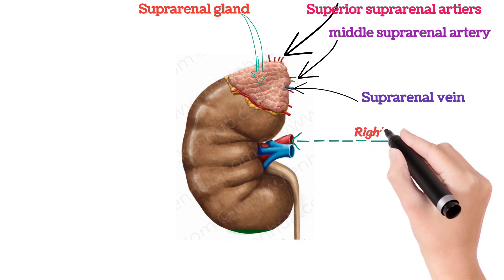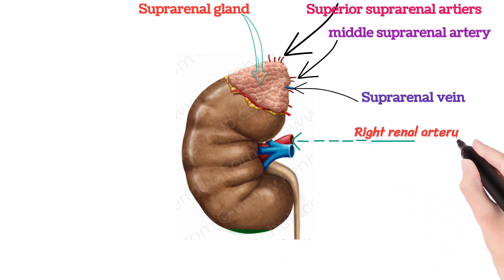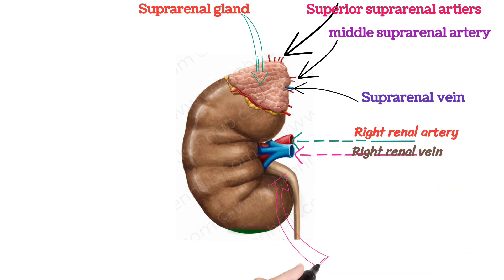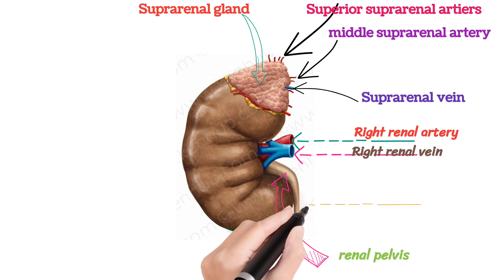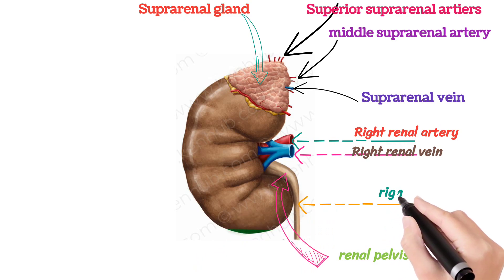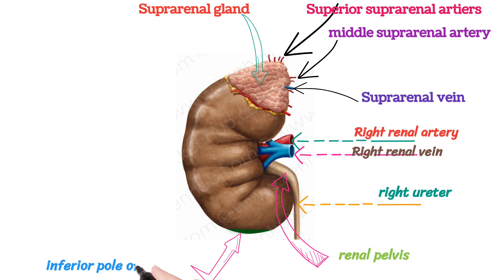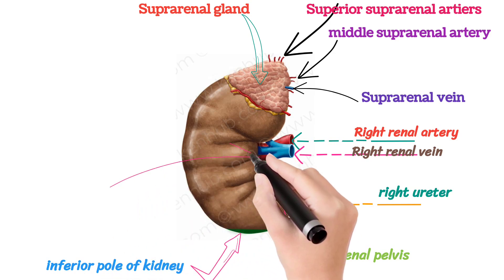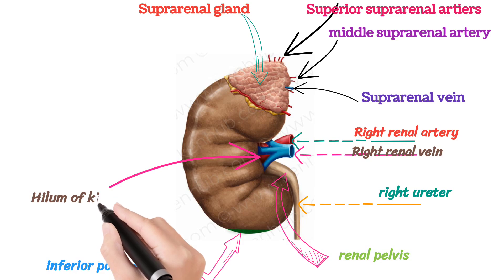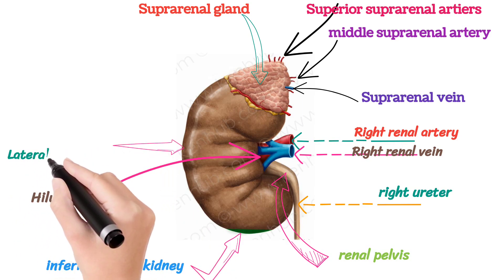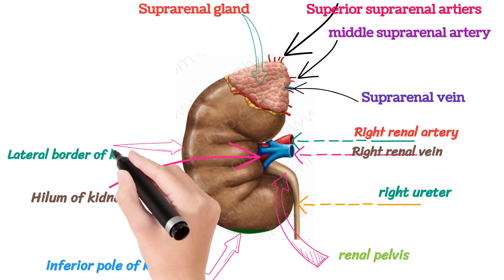The hilum is the entry and exit point for the neurovascular structures of the kidney: the renal artery and vein, renal plexus, and the ureter. The most superior vessel is the renal vein, which exits the kidney. Just below is the renal artery, with the ureter located most inferiorly of the three. The anterior-to-posterior orientation follows the same pattern: renal vein, renal artery, and ureter.